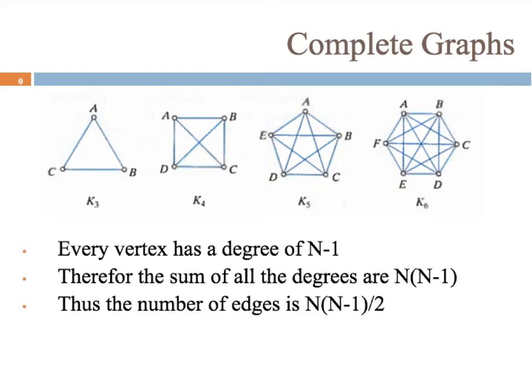Each vertex has a degree of n minus 1. Notice in K3 we have three vertices, so n equals 3, and the degree is 2 on each one — vertex a has two edges coming out of it, same for b and c. In K4 we have four vertices, so n equals 4, and each vertex is connected to every other vertex with degree 3.